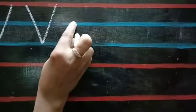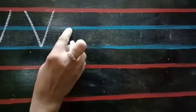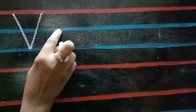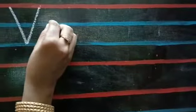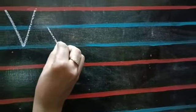How to write small letter V? You have to write small letter V within these two blue lines only. Down, up.